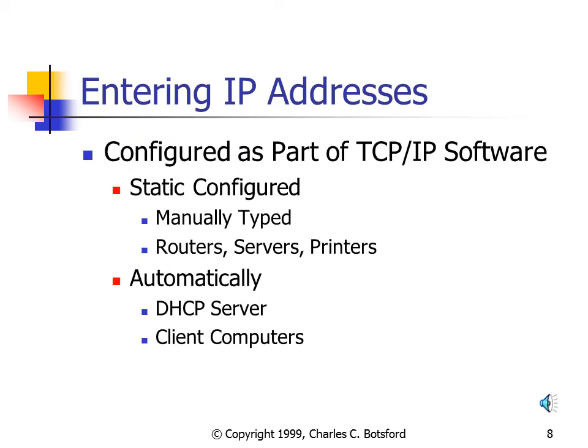Every TCP/IP device needs IP addressing information: always an IP Address, always a Subnet Mask, and in most cases a Default Gateway. These addresses are entered as part of the TCP/IP software and can be configured one of two ways — statically or automatically. Statically configured addresses are when the administrator goes to the device and types in the IP addresses. This is typically done for devices like routers, servers, and maybe printers, because statically configured addresses will never change.